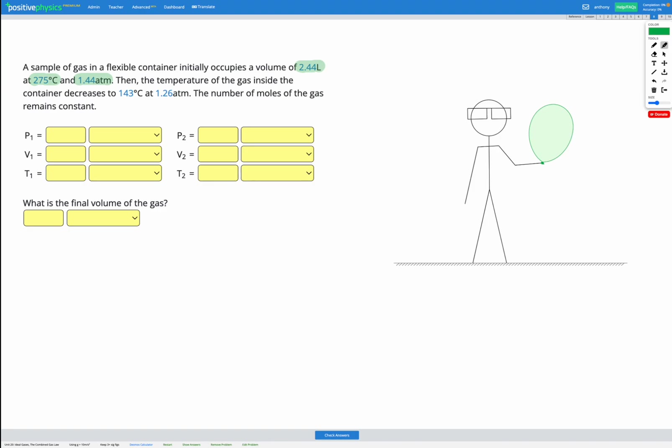Then the temperature of the gas inside the container decreases to 143 degrees C at a pressure of 1.26 atm. We're told the number of moles of the gas remains constant.